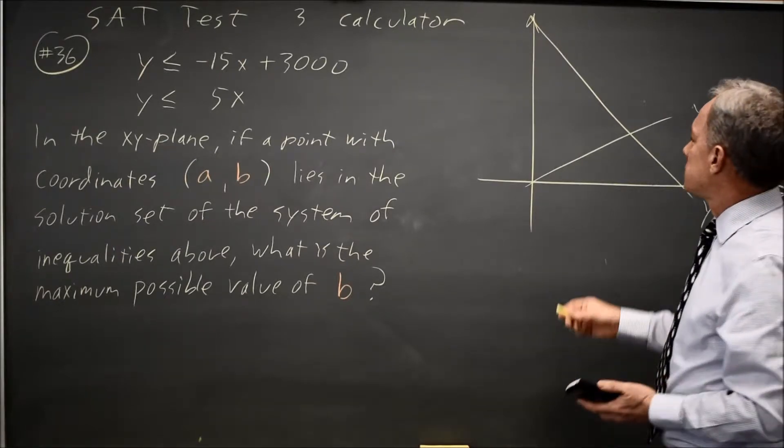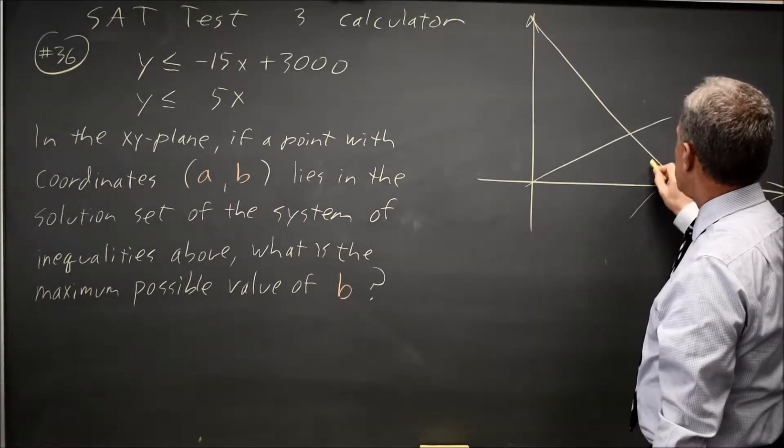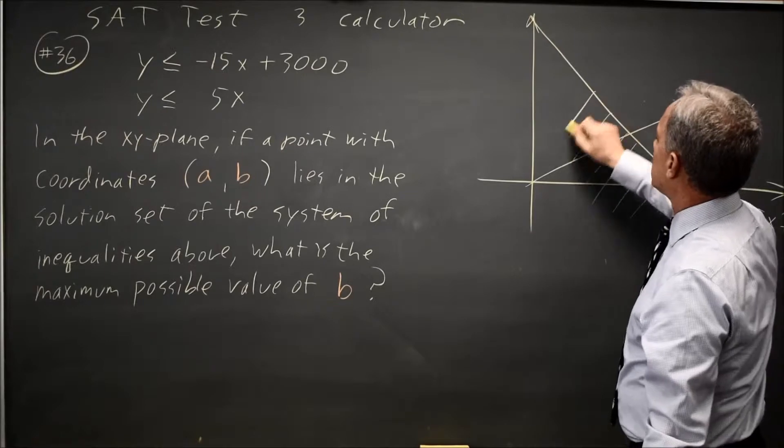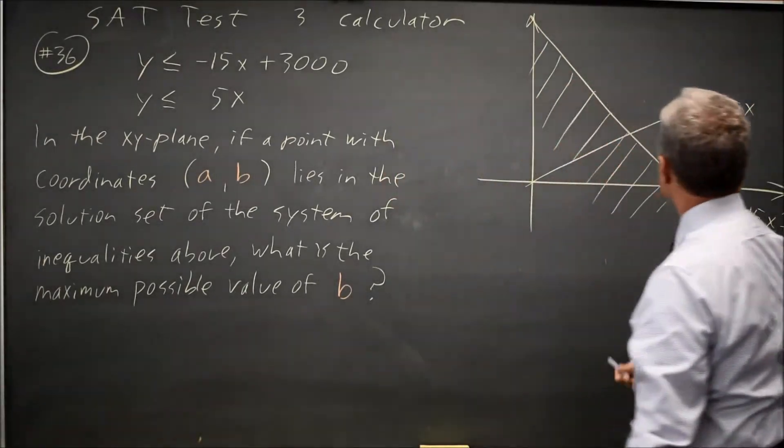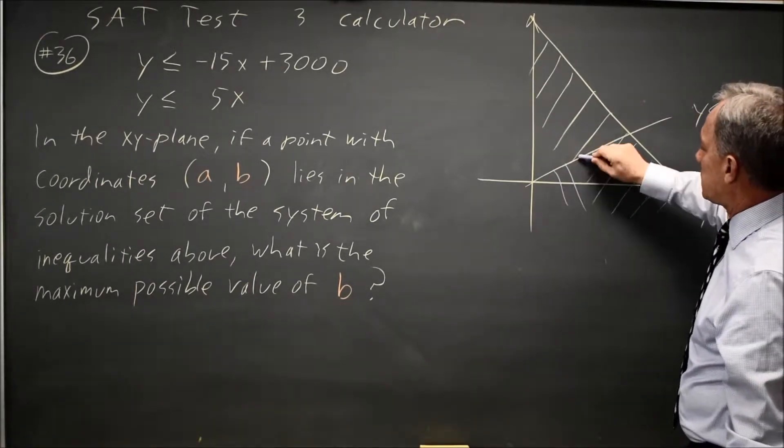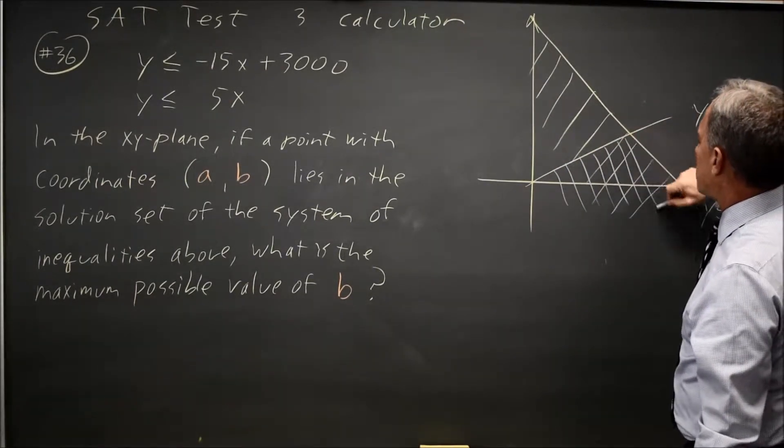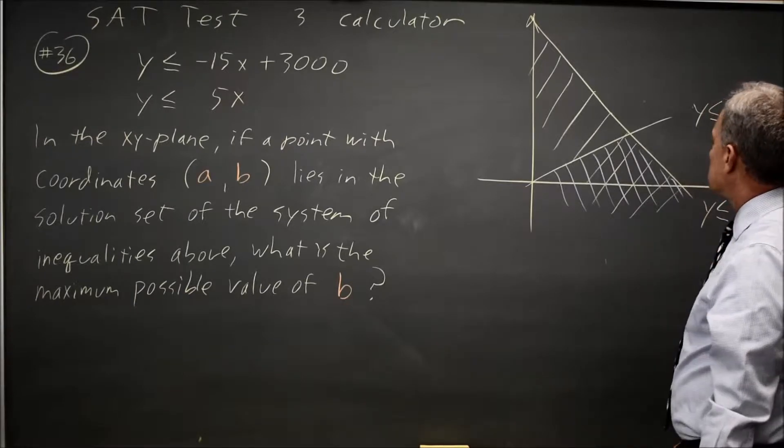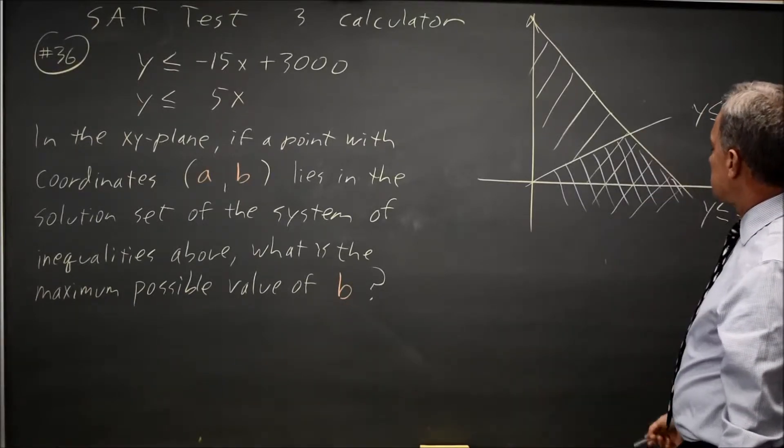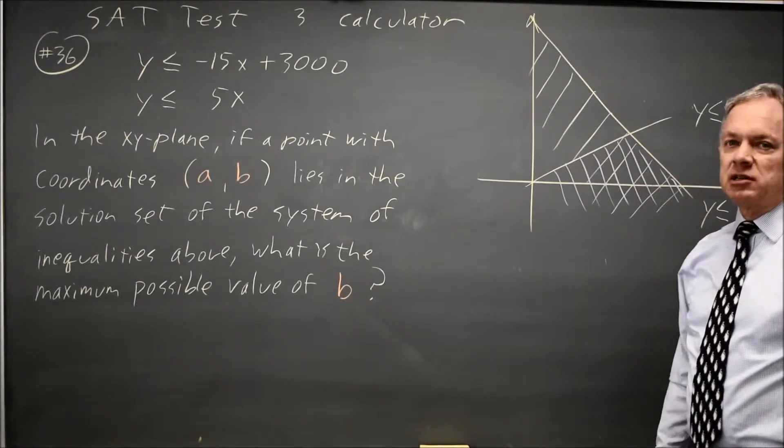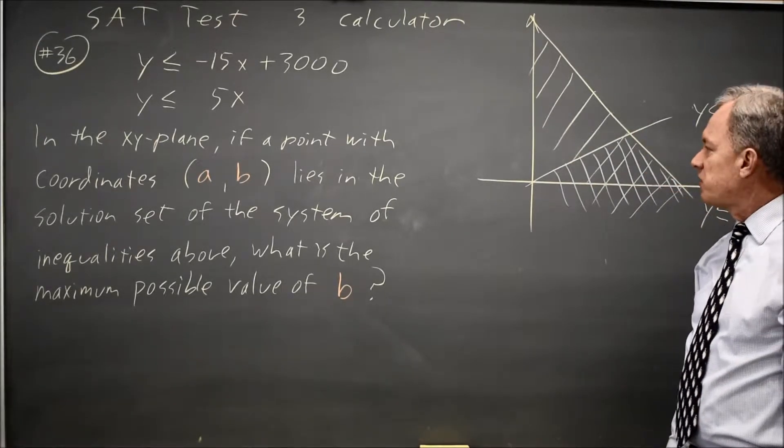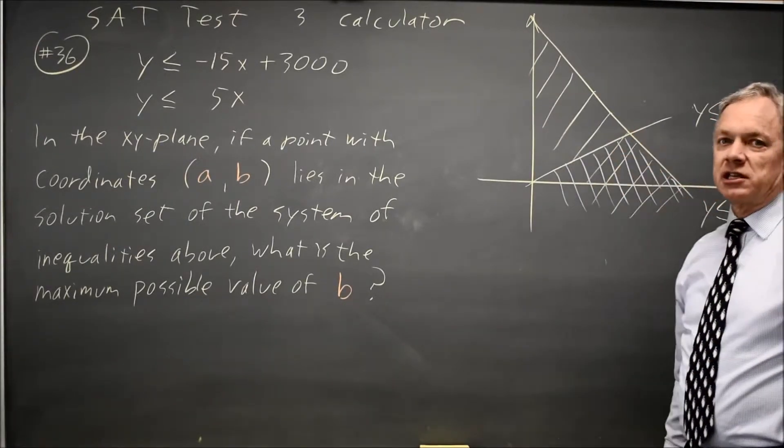And since they're less than or equal to, I need to be less than negative 15x plus 3,000, and I also need to be less than 5x. So the solution set is the region that's less than both functions, and the maximum y-value occurs at the intersection.